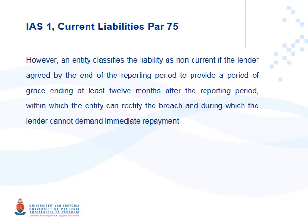Compare paragraph 74 with paragraph 75. Paragraph 75 says an entity classifies the liability as non-current if the lender agreed by the end of the reporting period to provide a period of grace ending at least 12 months after the reporting period, within which the entity can rectify the breach and during which the lender cannot demand immediate repayment. So paragraph 74 covers agreeing with the lender after year end — current liability. Paragraph 75 covers agreeing with the lender by year end — non-current liability.